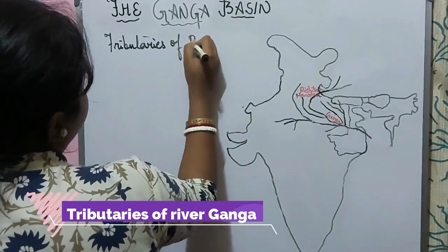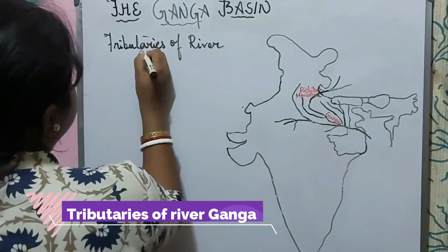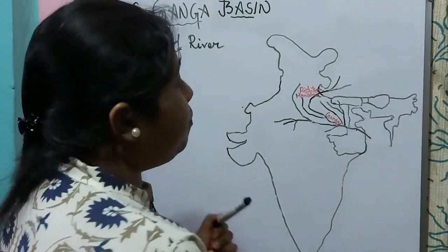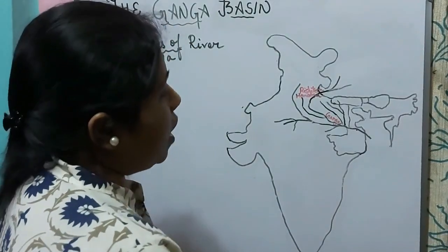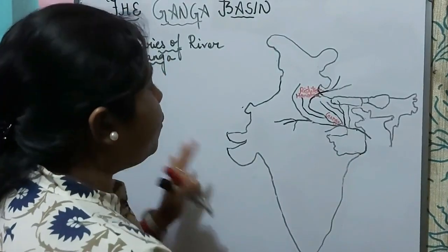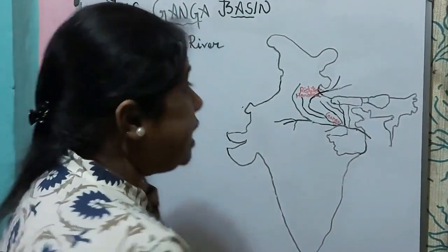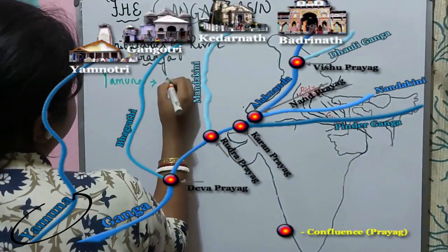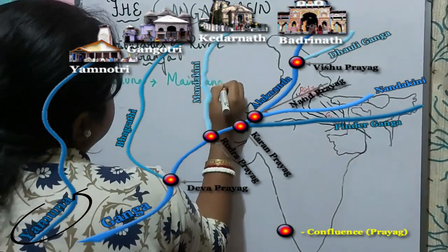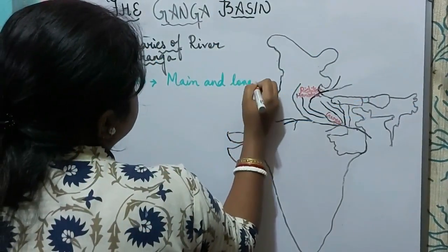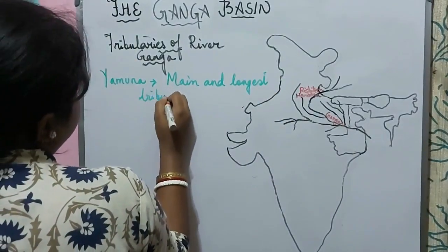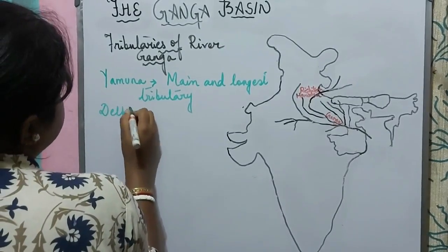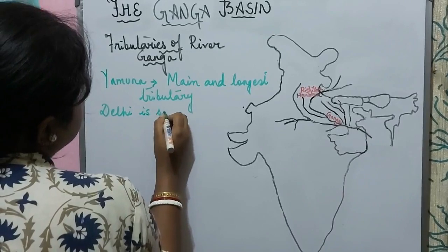After the Ganga reaches the plains, its movement becomes very slow. Here the river Ganga is joined by many tributaries. The most important and main tributary is the Yamuna — it is the main and longest tributary. You should know that the state of Delhi is situated on the bank of the river Yamuna.